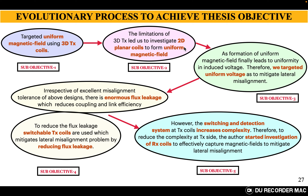Then later we understood that the target we were keeping — that is, to form a uniform magnetic field to mitigate the lateral misalignment problem — may not be the optimal method to perform the optimization process. Rather, because uniform magnetic field will ultimately give uniform induced voltage in terms of the output of the receiver coil antenna. So instead of forming a uniform magnetic field, let us keep an objective of uniform induced voltage and find what is the optimal magnetic field strength. That comes under sub-objective 3. Interestingly, we found that it is not a uniform magnetic field but rather a non-uniform magnetic field that is the optimal magnetic field strength to mitigate the misalignment problem.